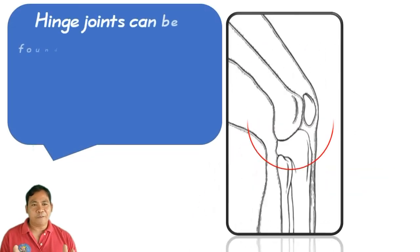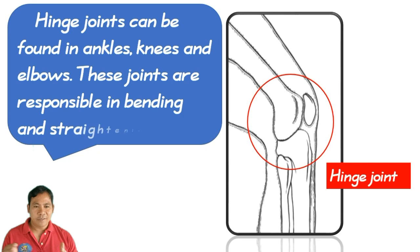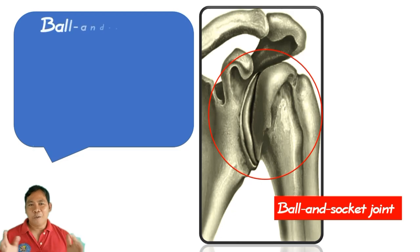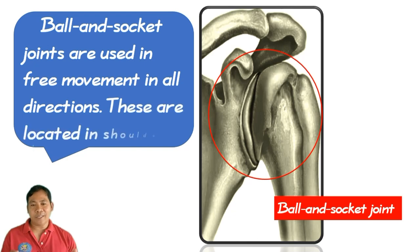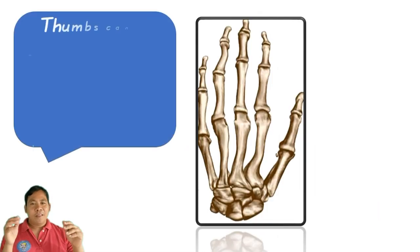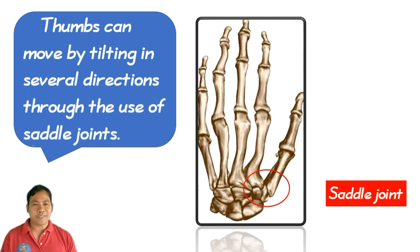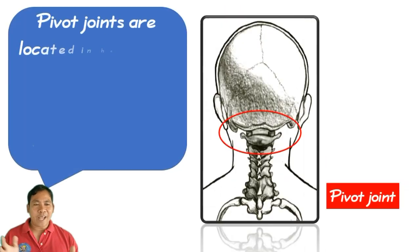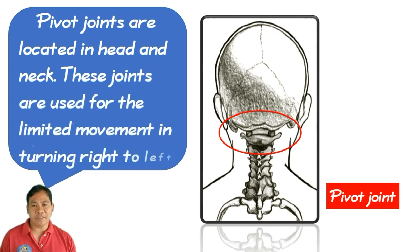Hinge joints can be found in the ankles, knees, and elbows — these joints are responsible for bending and straightening. Ball and socket joints allow free movement in all directions and are located in the shoulders. Thumbs can move by tilting in several directions through saddle joints. Pivot joints are located in the head and neck and are used for limited turning movement from right to left.